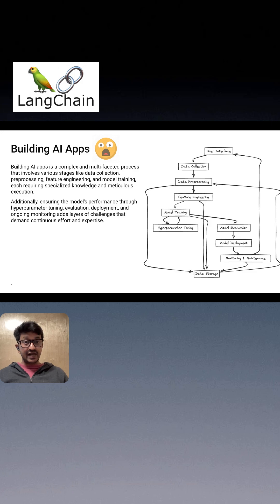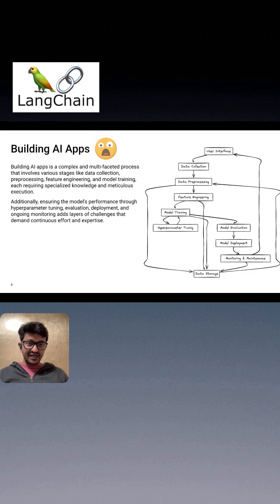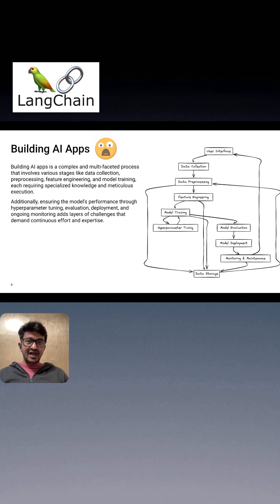This is my first slide on LangChain. We need to start from basics — it's all about building AI applications. As you can see from the emoji, building AI applications is not an easy task. It's a very complex and daunting task for developers and AI engineers, because it involves a lot of processes step by step, starting from data collection, data processing, feature engineering, model training, selecting a proper model for your AI application, and hyperparameter tuning. All these steps add an extra layer of challenge and require a lot of effort. Everything is kind of segregated — you need to connect everything to build a proper AI application.